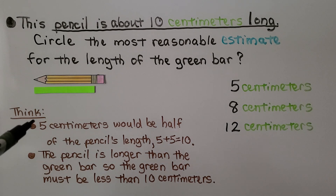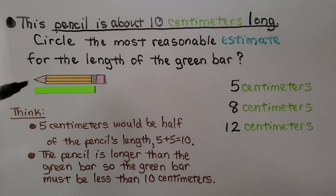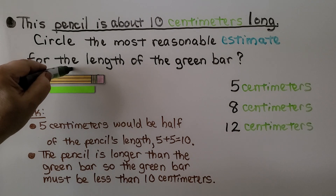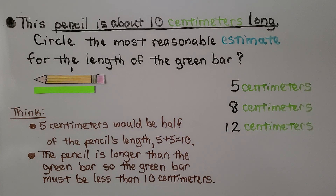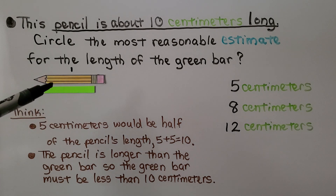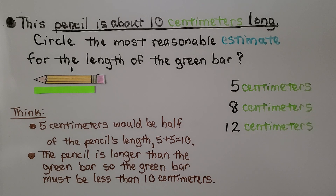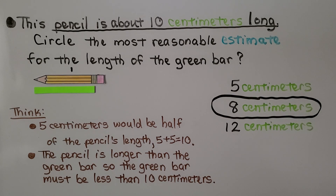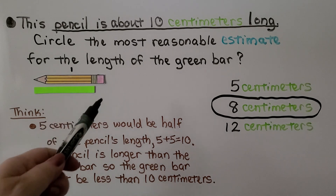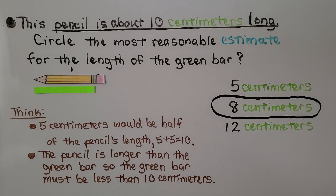We think 5 centimeters would be half — if the pencil is 10 centimeters, then about halfway is 5. The pencil is longer than the green bar, so it must be less than 10 centimeters. The most reasonable estimate for the length of the green bar would be 8 centimeters. We know it's more than halfway and less than 10, so it must be 8.